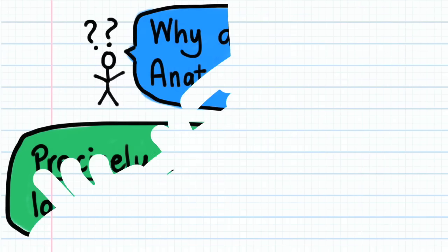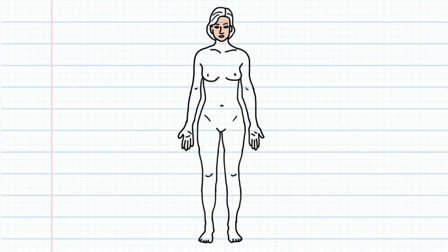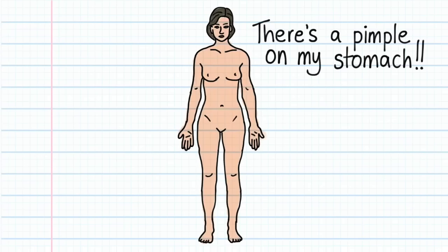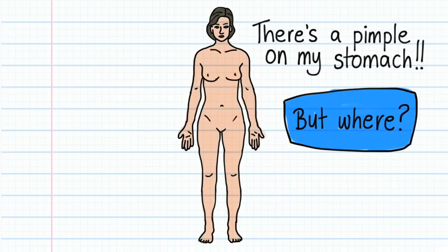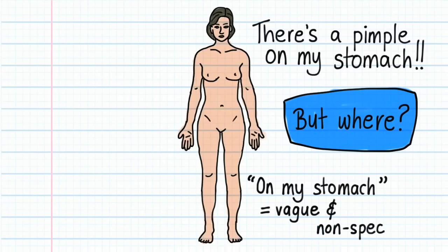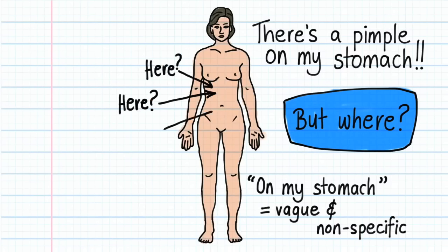Let's imagine the following scenario. Here is a female. She's upset, and it's not just because she's naked on YouTube — it's mostly because she's just discovered a rather large pimple on her stomach. But where exactly on her stomach is it? Statements like 'there's something on my stomach' are so vague and non-specific that they don't really mean anything to an anatomist. Is the pimple here, or here, or here?